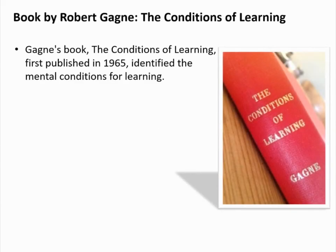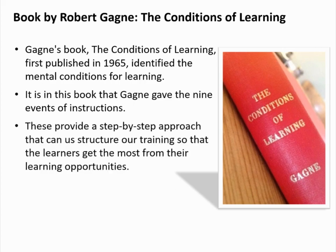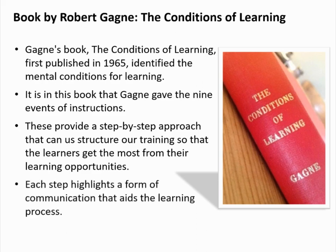Gagné's book, The Conditions of Learning, first published in 1965, identified the mental conditions for learning. It is in this book that Gagné gave the 9 events of instruction. These provide a step-by-step approach that can help us structure our training so that the learners get the most from their learning opportunities. Each step highlights a form of communication that aids the learning process. When each step is completed in turn, learners are much more likely to be engaged and to retain the information or skills that they're being taught. If you use this approach before any type of training session or presentation, you'll remember how to structure your session so that your people get the best possible learning experience.